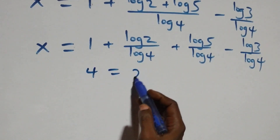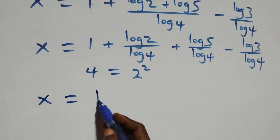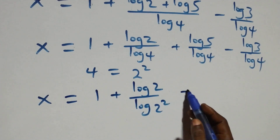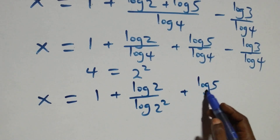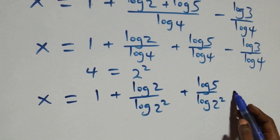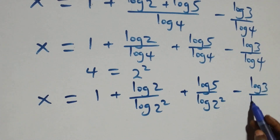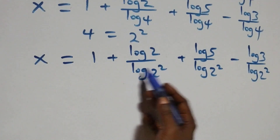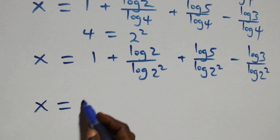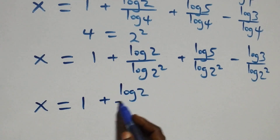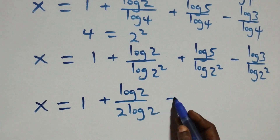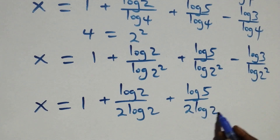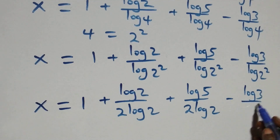We can write 4 as 2 times 2, which is 2 squared. So what we have becomes x equals 1 plus log 2 over log 2 squared, plus log 5 over log 2 squared, minus log 3 over log 2 squared. We then apply the power rule of logarithm: the 2 comes down, giving x equals 1 plus log 2 over 2 log 2, plus log 5 over 2 log 2, minus log 3 over 2 log 2.